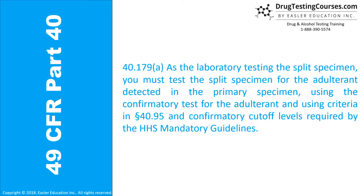40.179(a). As the laboratory testing the split specimen, you must test the split specimen for the adulterant detected in the primary specimen using the confirmatory test for the adulterant, and using criteria in Section 40.95 and confirmatory cutoff levels required by the HHS Mandatory Guidelines.